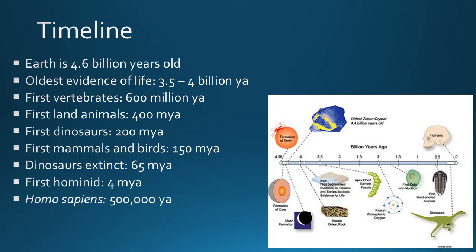I'm going to start off with a quick timeline of the Earth and life on Earth. The Earth is about 4.6 billion years old, and the oldest evidence of life on Earth was about 3.5 to 4 billion years ago. Vertebrates didn't come around until about 600 million years ago. Land animals, even more recent, 400 million years ago. Dinosaurs, 200 million years ago. Mammals and birds, not until 150 million years ago. The first hominid, a human-like primate, was just 4 million years ago. And Homo sapiens first came on the scene about 500,000 years ago — just a tiny sliver at the very end. So we're very recent.